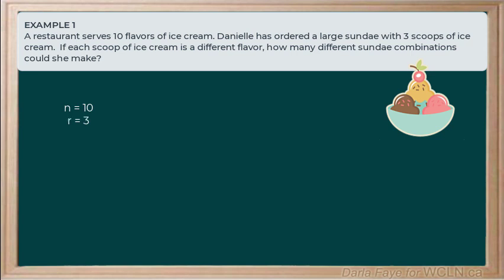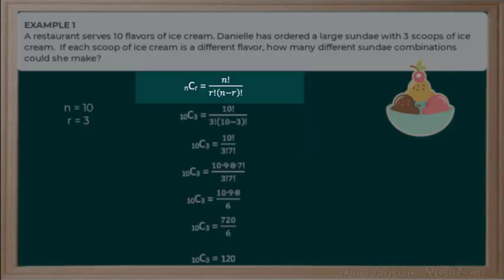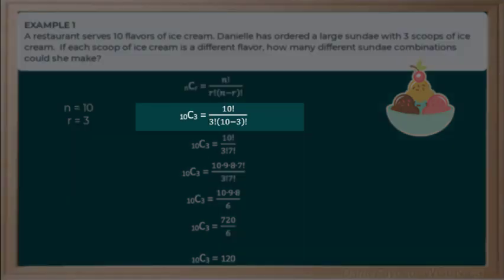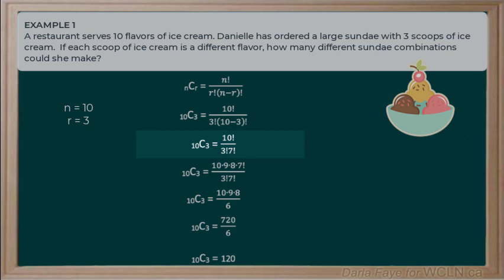We will begin by writing out this new equation for nCr. So, that's equal to n factorial divided by r factorial multiplied by the difference of n and r factorial. Then, we can plug in what we know. So, we know n is equal to 10 and r is equal to 3. If we simplify our equation a little bit here, we'll see that we've got 10 factorial over 3 factorial times 7 factorial.